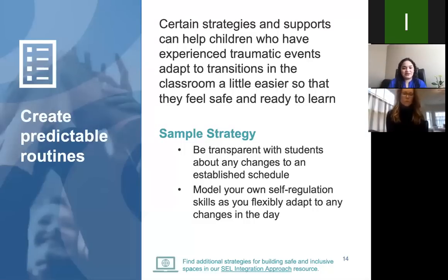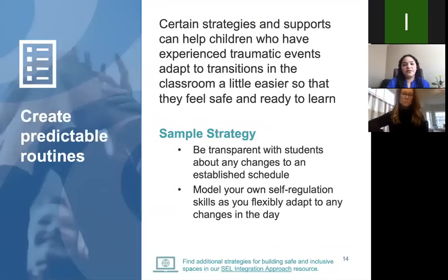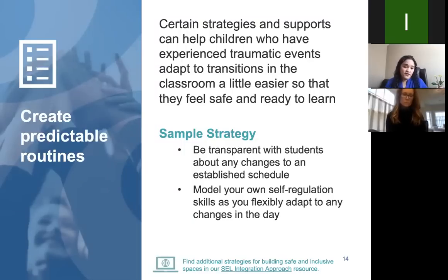So what are these strategies? We talk about five key ones. First is creating predictable routines — certain strategies that can support children who've experienced trauma to adapt to transitions into the classroom a little bit easier so they feel safe and ready to learn. One sample strategy is being transparent with students about any changes in the established schedule. This is something that can be done even in remote learning situations, just by talking carefully and being upfront about changes.